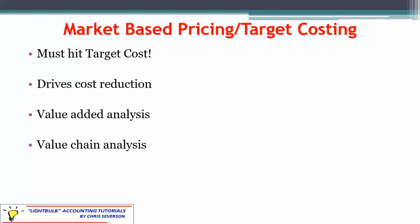Once we determine that target cost, we have to hit it. We do whatever we need to do — redesign the product, find cheaper suppliers of materials or labor. This drives cost reduction because hitting that target cost is a goal we must achieve, or else we'll reduce our profit below the desired level.